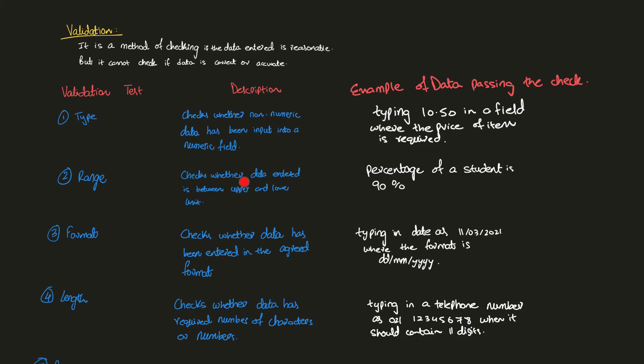Next we have range check. It checks whether data is entered between an upper limit and a lower limit. For example, on a test the lowest percentage can be 0% and the highest can be 100%. A student's percentage of 90 fits the range because it is between 0 and 100. However, a negative percentage or one greater than 100 would fail the range check because it is either below the lower limit or above the upper limit.